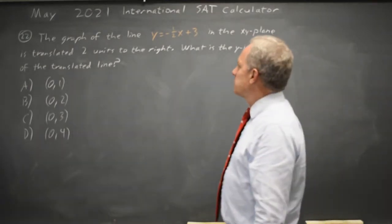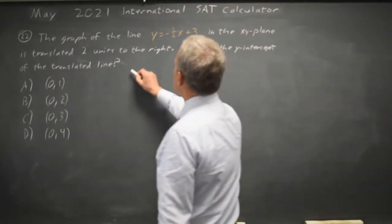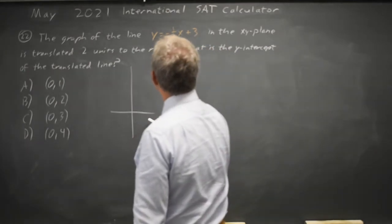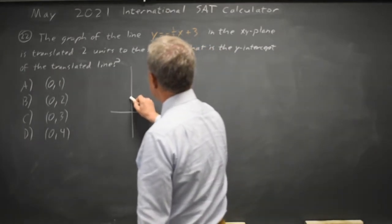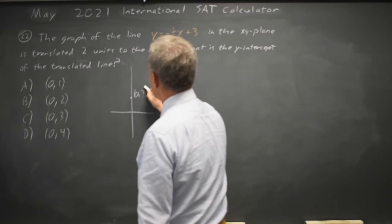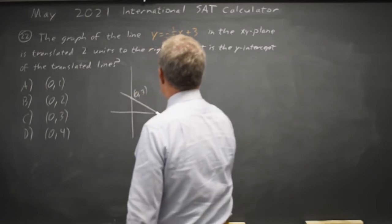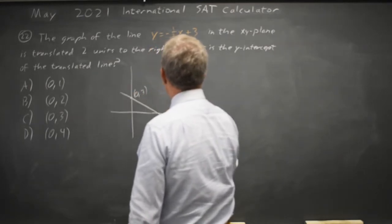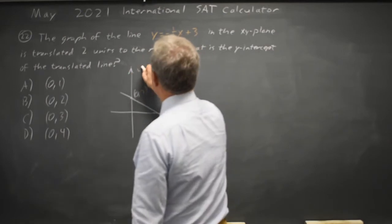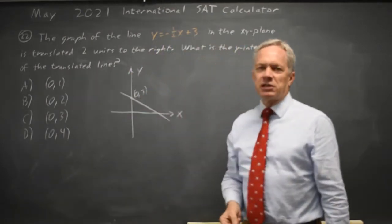The College Board is asking about the y-intercept of a graph. We have y equals negative 1 half x plus 3. So a slope of negative 1 half and an intercept at 0, 3.